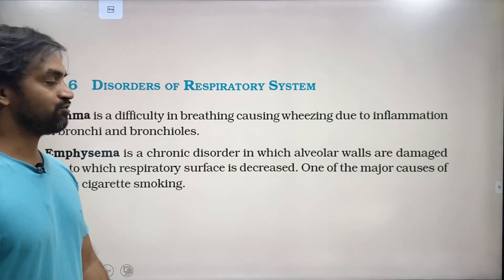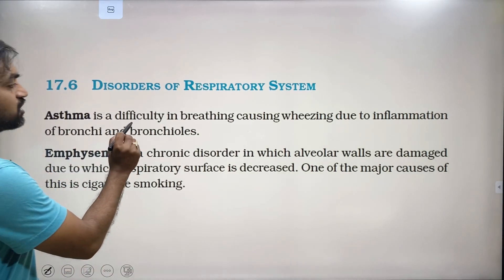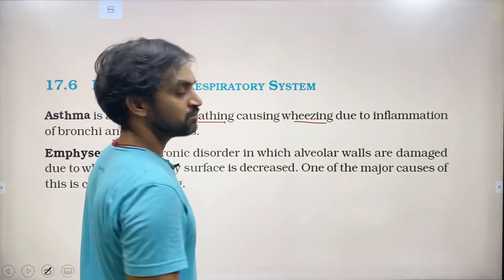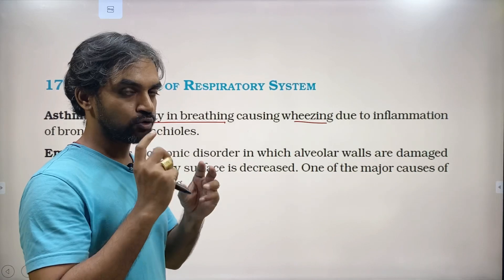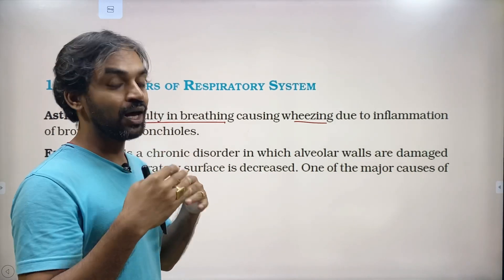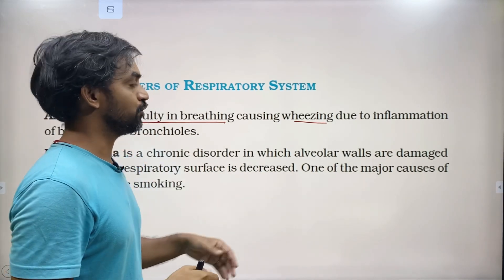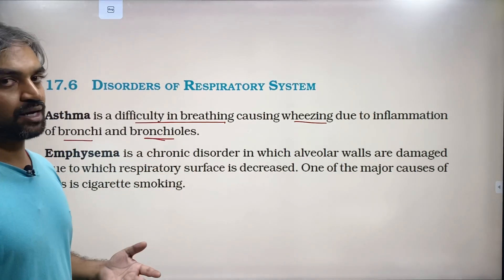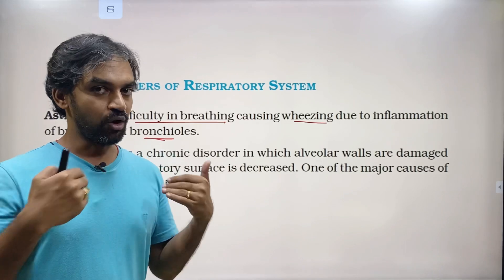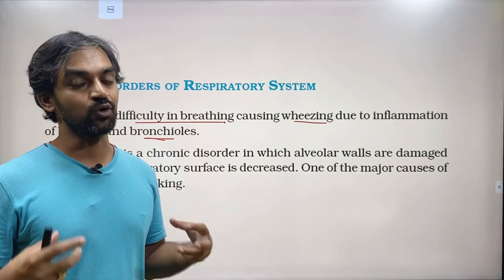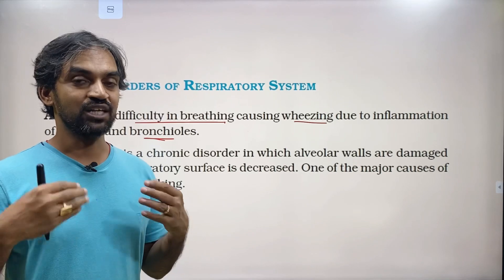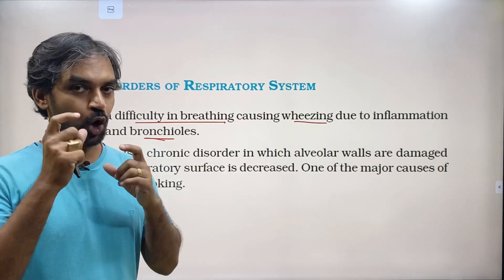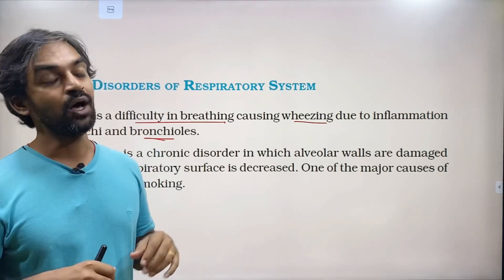Disorders of the respiratory system: Asthma is difficulty in breathing causing wheezing and shortness of breath. It occurs due to inflammation in the bronchi and bronchioles. The trachea divides into bronchi and bronchioles; inflammation there restricts airflow, causing short, difficult breathing.